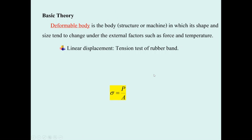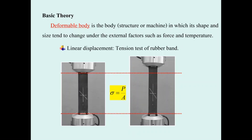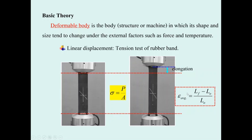The lab is going to cover some basic theory. Since lumber is a deformable body and it can deform a lot, it is a good example to use in this lab. When you apply a force to the lumber band, the lumber band will elongate. It elongates due to the force that produces stress inside it. You can compute the stress as equal to the force divided by the area. The elongation that occurs, divided by the original length, gives you the average strain.